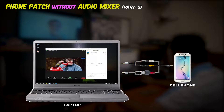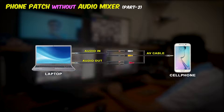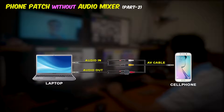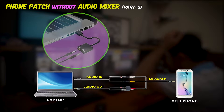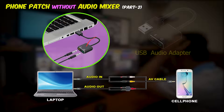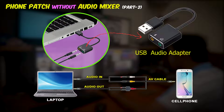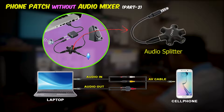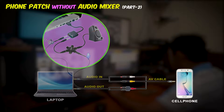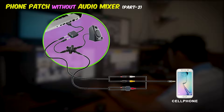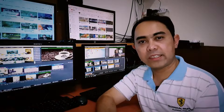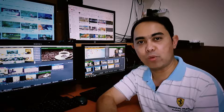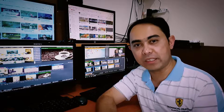In this connection, you cannot hear the audio of your laptop because we route it into the USB audio adapter. So you need an audio splitter, as shown in the picture, so that you can connect your speaker and also connect the microphone that will be connected to your cell phone. That's it — this is how to set up a phone patch connection with and without audio mixer.